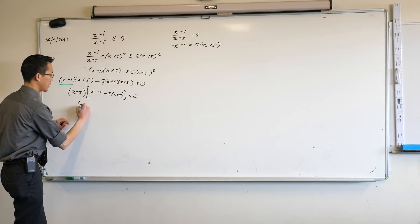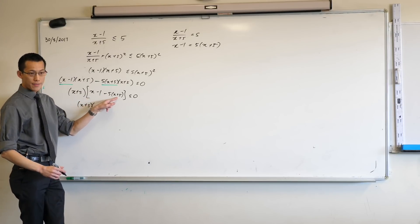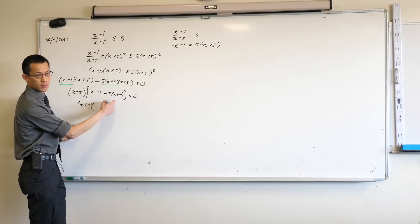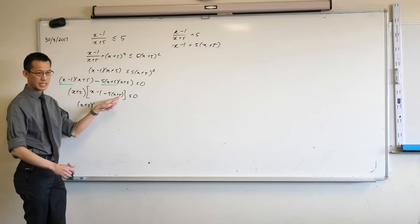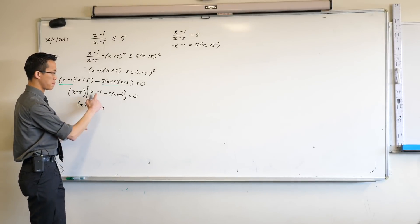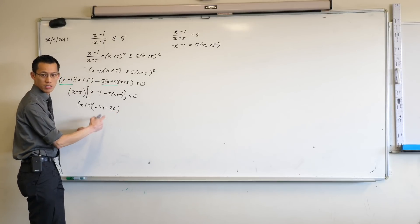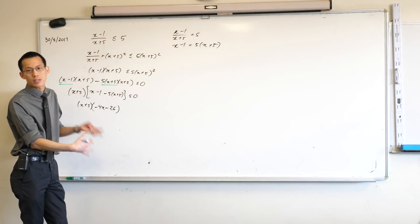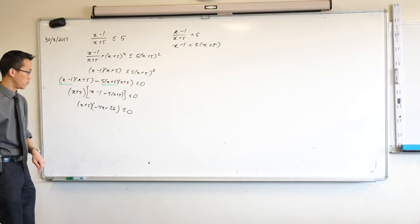I can tidy this up a little bit. You can collect some like terms. This is going to be minus 5x, so x minus 5x will be minus 4x. Then this will become minus 25, so minus 1 minus 25 is minus 26. That should look familiar. Do you remember that number coming up? Because we're solving the same problem, we're just looking at it somewhat differently. We want that to be less than or equal to 0.